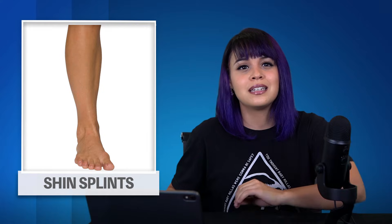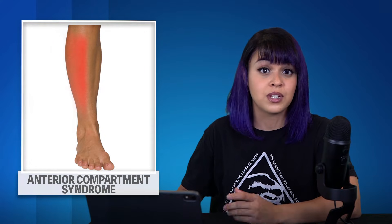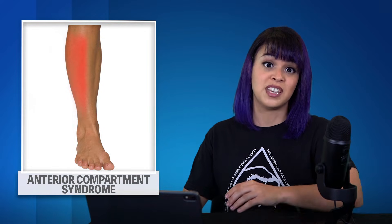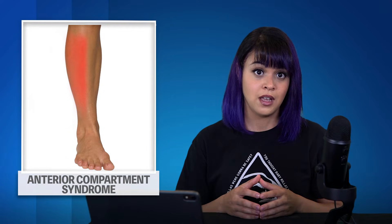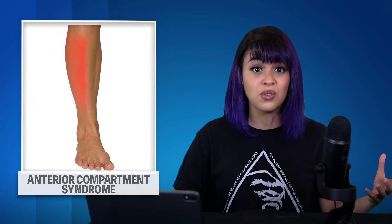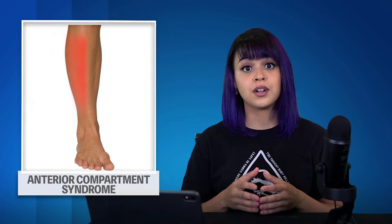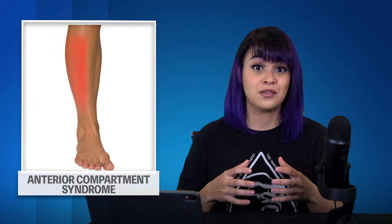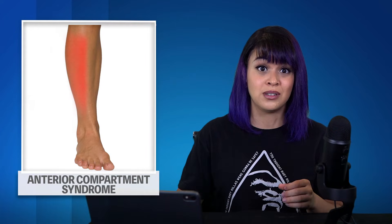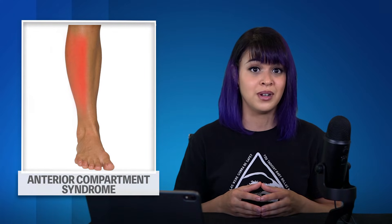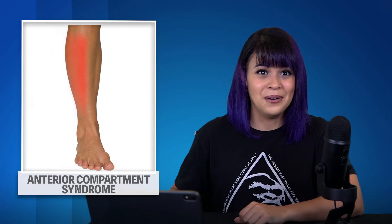The second possibility is anterior compartment syndrome, which can be either acute or chronic. Chronic compartment syndrome happens when muscle hypertrophy outpaces fascia expansion — the muscle grows too big too quickly for the fascia around it to stretch out and make room. Your gains are too fast. Acute compartment syndrome usually occurs after a direct hit to the muscle causing rapid swelling of blood and fluid, which can result in permanent loss of feeling and muscle damage if not addressed. It sucks.